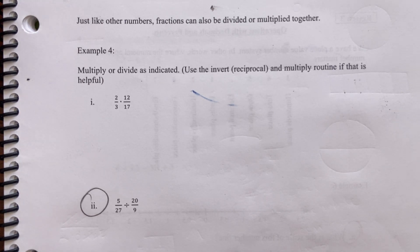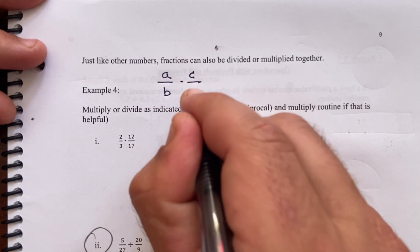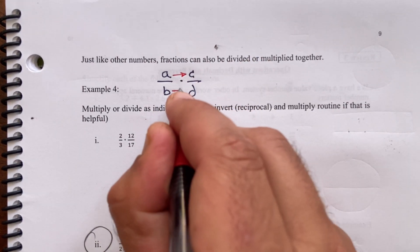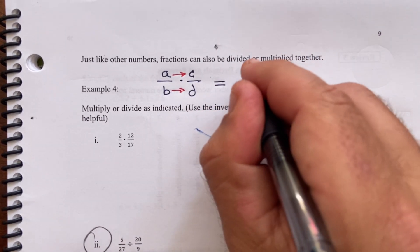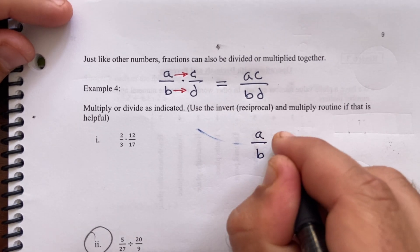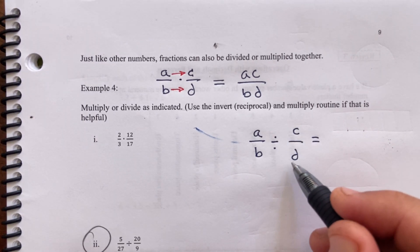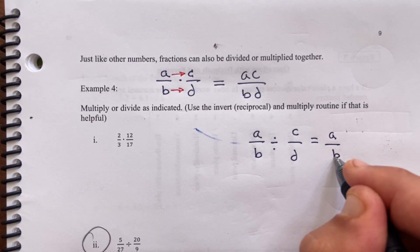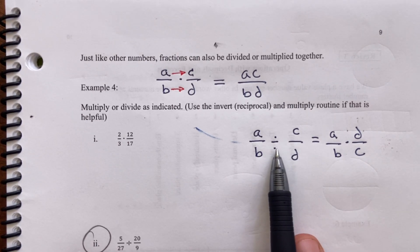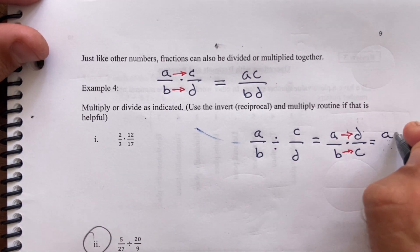For multiplying fractions: if you have a over b times c over d, you multiply straight across to get ac over bd. For division, if you have a over b divided by c over d, you invert and multiply — changing it to a over b times d over c, then multiply straight across to get ad over bc.